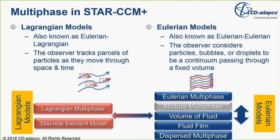Within STAR-CCM+, we have the standard Eulerian-Lagrangian, or Euler-Lagrange type of models, as well as Eulerian-Eulerian, or Euler-Euler type of models. In the Lagrangian type of models, the observer tracks parcels as they move through space and time. There are two different types: Lagrangian Multiphase, called LMP, and the Discrete Element Model, called DEM, which is an extension of the Lagrangian multiphase model.